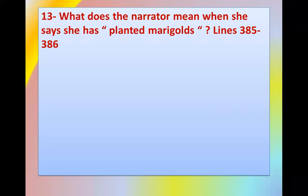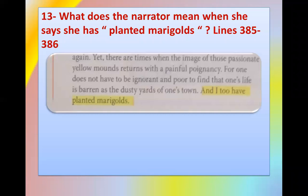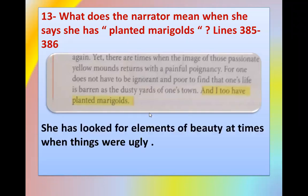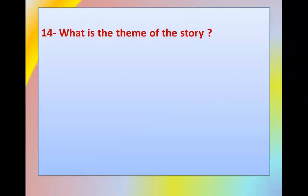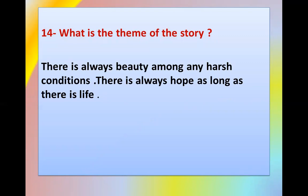What does the narrator mean when she says she has 'planted marigolds'? Found in the last lines, 385 to 386: 'And I, too, have planted marigolds.' She has looked for elements of beauty at times when things were ugly. By the end of the story, she has learned the lesson — she must do the same as Miss Lottie and try to find beauty in any ugly situation. The theme of the story is that there is always beauty among harsh conditions, and there is always hope as long as there is life.